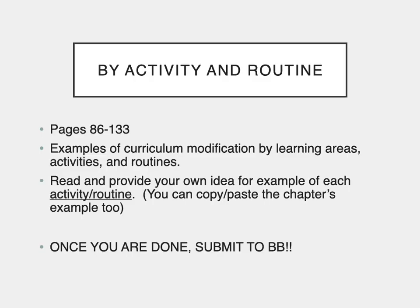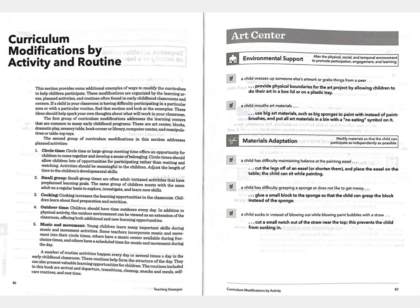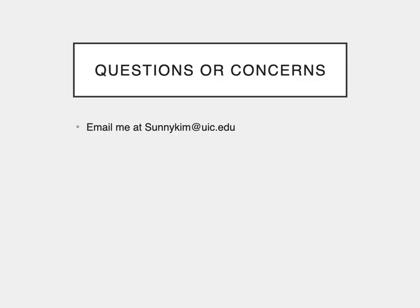Once you're done with curriculum modification by modification type, move on to curriculum modification by activities and routines, starting from page 86 to 133. You'll do the same thing for this part — read the examples and scenarios, write down the scenario you pick, and provide your own curriculum modification idea or copy the chapter's example if you think it's the best answer. If you have any questions or concerns, please email me at sunnykim@uic.edu. See you — bye!